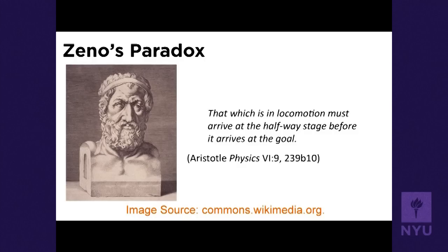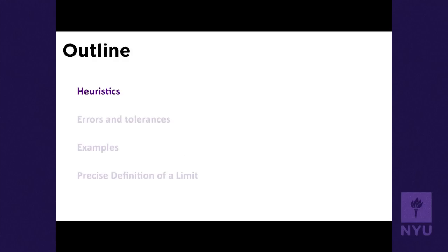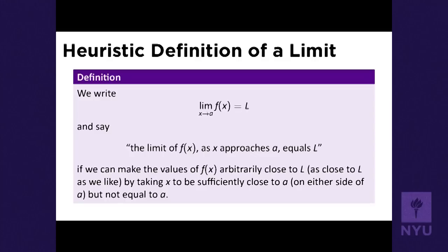So that's the resolution to Zeno's paradox. What does this have to do with functions? Well, we described a lot of functions there. My position is a function of time. As I went out the door, what I was trying to do was have my position function approach a certain value. So that brings us to the basic idea of the limit.